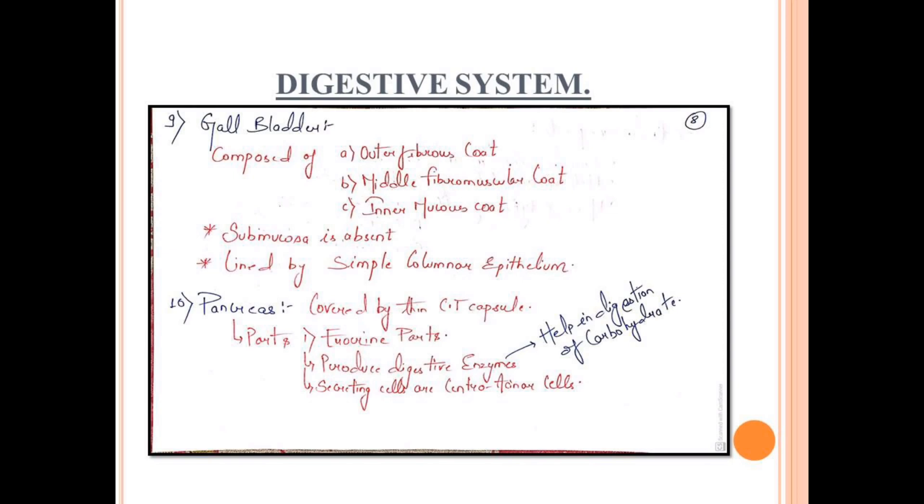Another organ is gallbladder. Gallbladder is composed of outer fibrous coat, middle fibromuscular coat with fibers and muscles, and inner mucous coat. What we call submucosa is absent. It is lined with simple columnar epithelium.